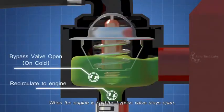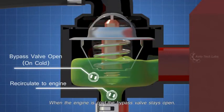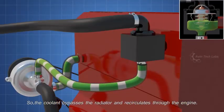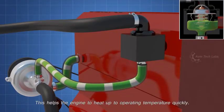When the engine is cold, the bypass valve stays open. So, the coolant bypasses the radiator and recirculates through the engine. This helps the engine to heat up to operating temperature quickly.